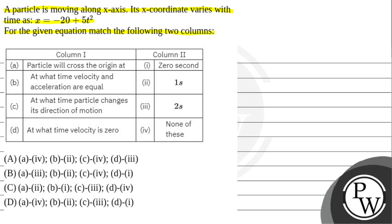Column 1: A — particle will cross the origin at; B — at what time velocity and acceleration are equal; C — at what time particle changes its direction of motion; D — at what time velocity is 0.